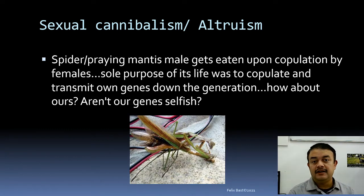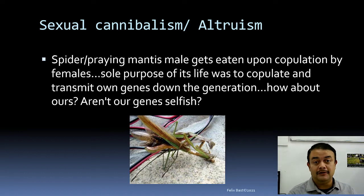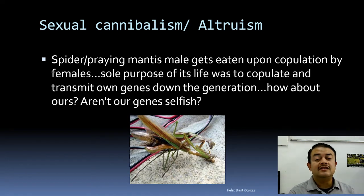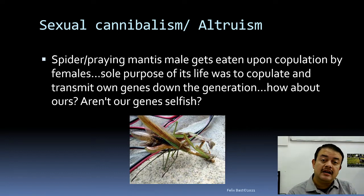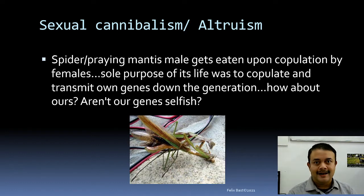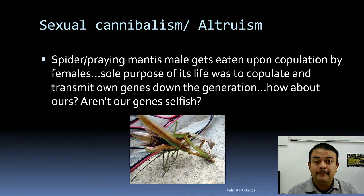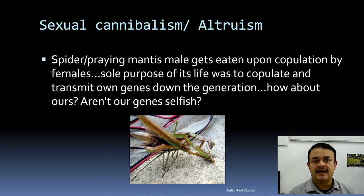Sexual cannibalism is very common in spiders and praying mantises. The male copulates with the female and just afterward the female eats the male, because the male's entire purpose — transmitting sperm — has been fulfilled. His body then becomes food for the female. This is common in many social animals like ants, spiders, and other insects.